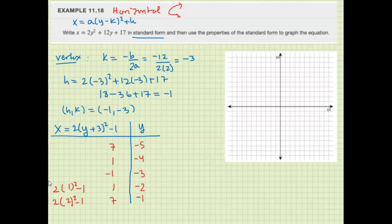So let's graph this. We start with the vertex at negative 1 and negative 3. Then we have 1 and negative 2, and 1 and negative 4.